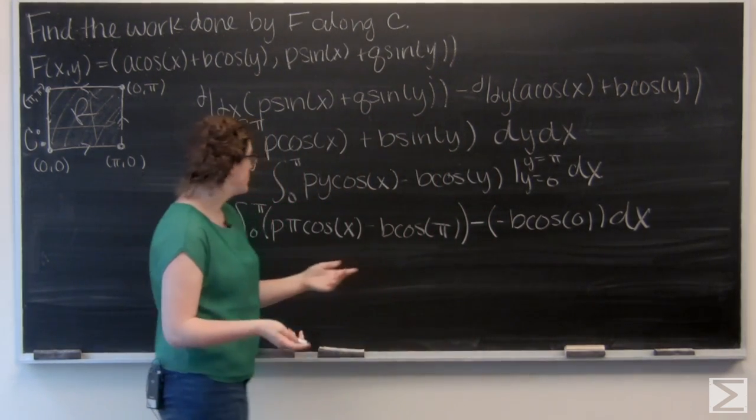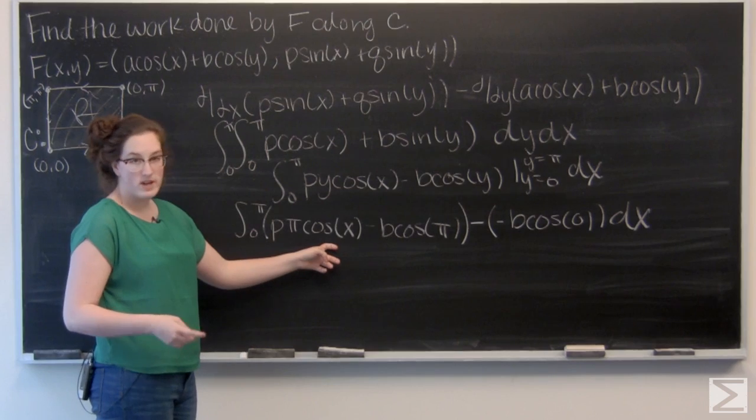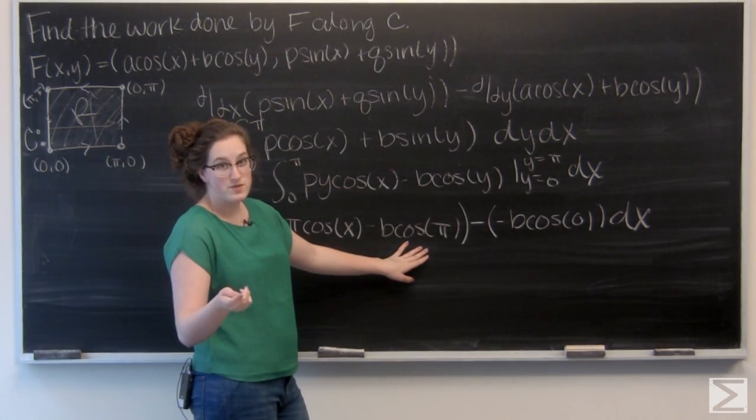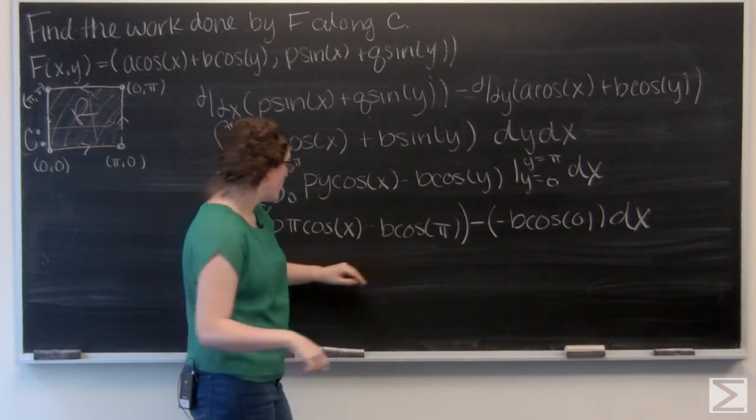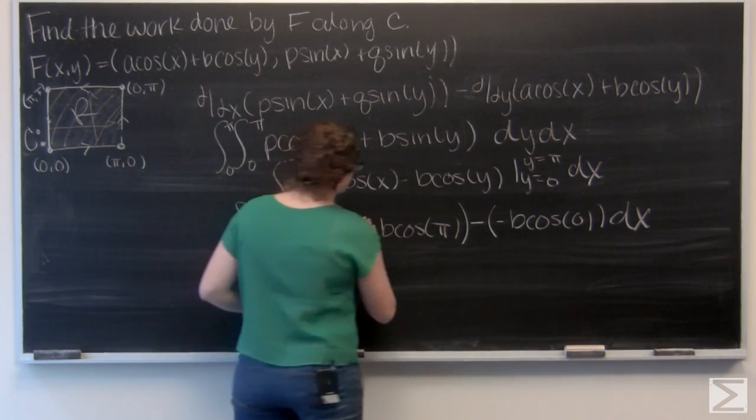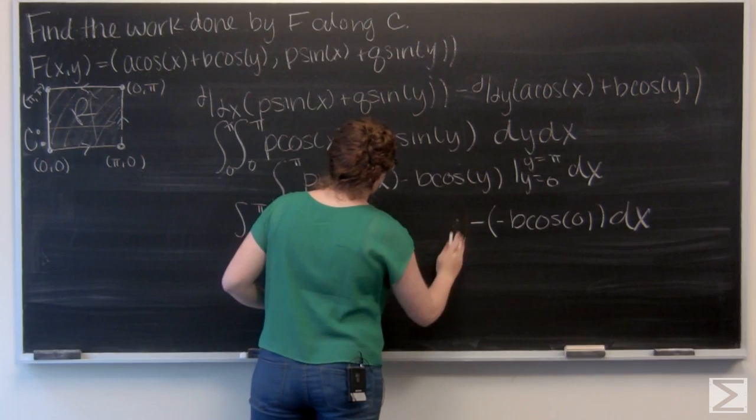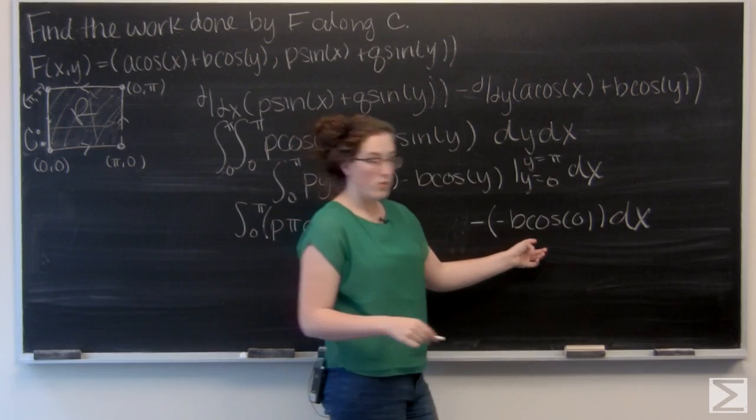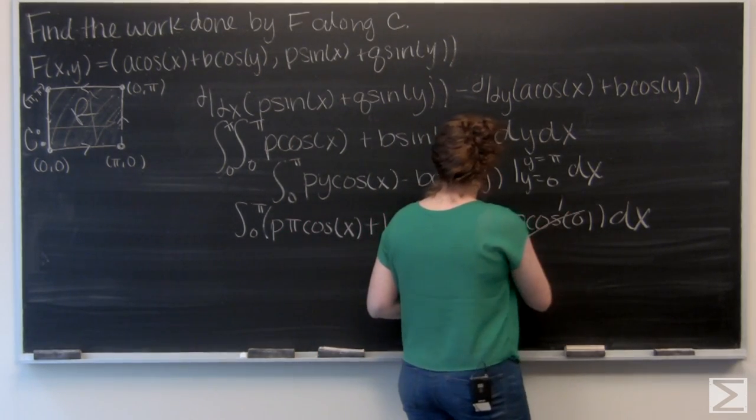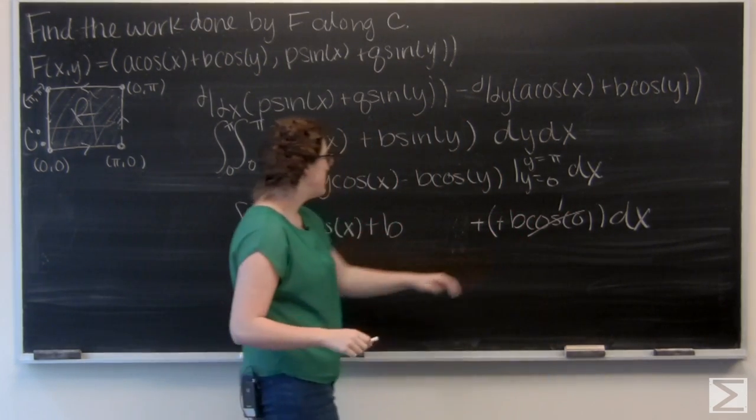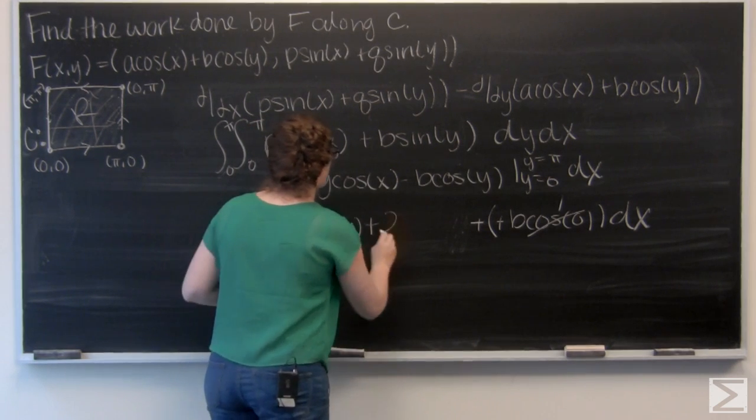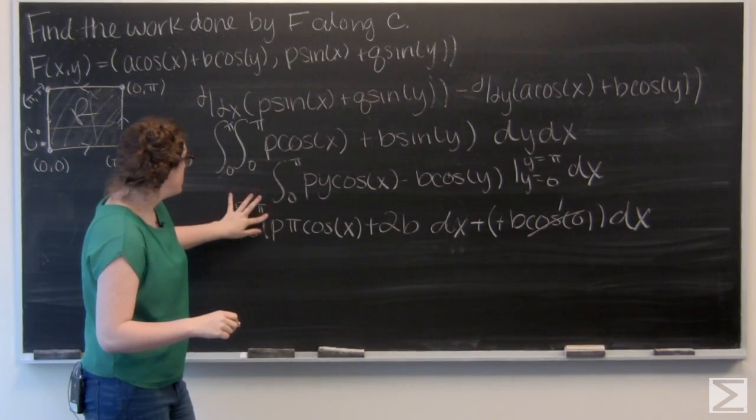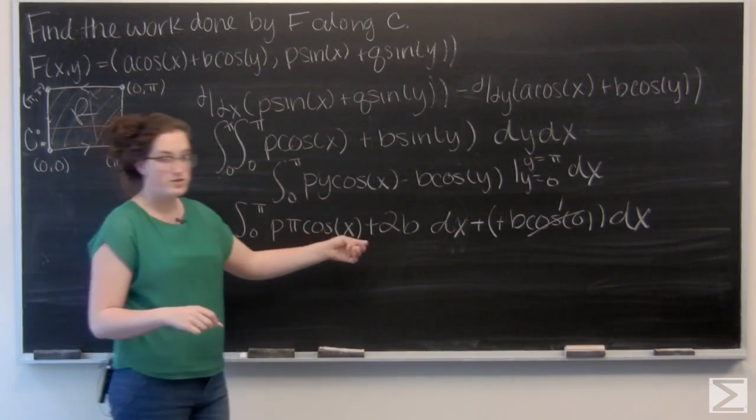Now let's go ahead and evaluate all of these things. So P π sin(x) stays as is. I can substitute a negative 1 for cos(π). So here I've got plus B. And then over here, cos(0) is 1. So I'm adding another B. So I've got P π cos(x) plus 2B.